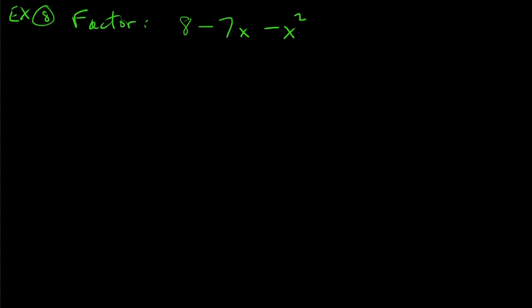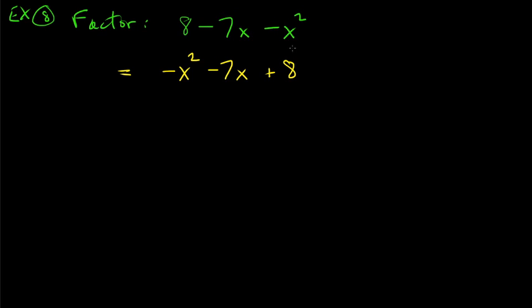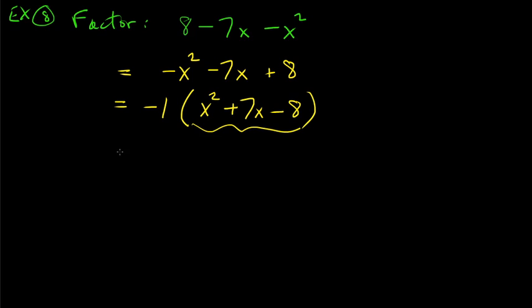Here's an interesting one: factor 8 − 7x − x². This looks backwards — let's rewrite with the squared term first: −x² − 7x + 8. The problem is the negative sign in front of x². When that happens, factor out a negative 1, giving −1(x² + 7x − 8). Now we need to factor x² + 7x − 8.